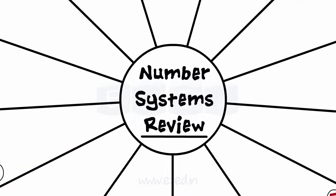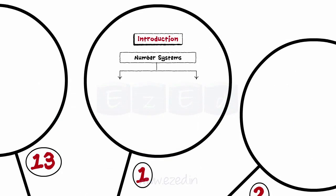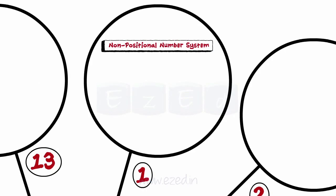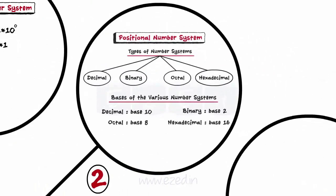Let's have a quick review of what we have studied in this lecture. Number systems are of two types, namely positional and non-positional. In a non-positional number system, each number in each position does not have to be positional itself. A positional notation numeral system is one in which each position is related to the next by a constant multiplier. The various types of number systems used in computers are decimal, binary, octal, and hexadecimal.